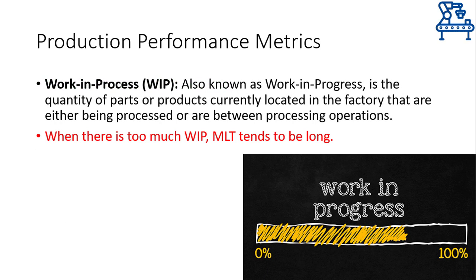The last production performance metric I am going to discuss is work in process, or work in progress, abbreviated as WIP. This is the number of work units currently present in the factory on which work is being done, or which are between processing operations. If work in progress is too much, it means the plant is not finishing the products but more and more input parts are entering the plant. This will cause longer queues, more waiting in storage, and hence the overall manufacturing lead time will increase.